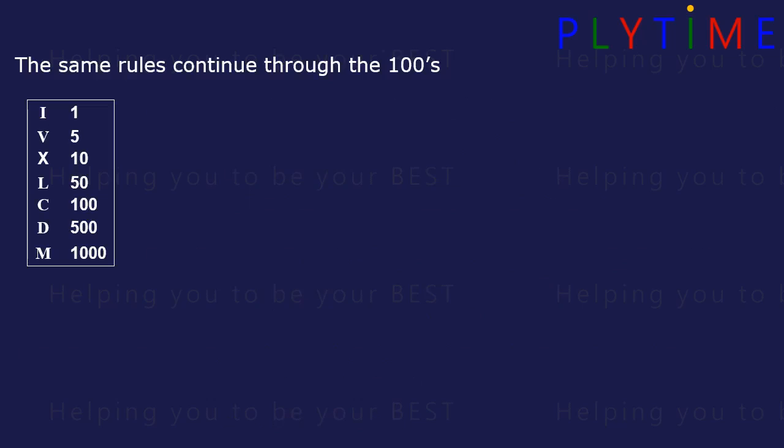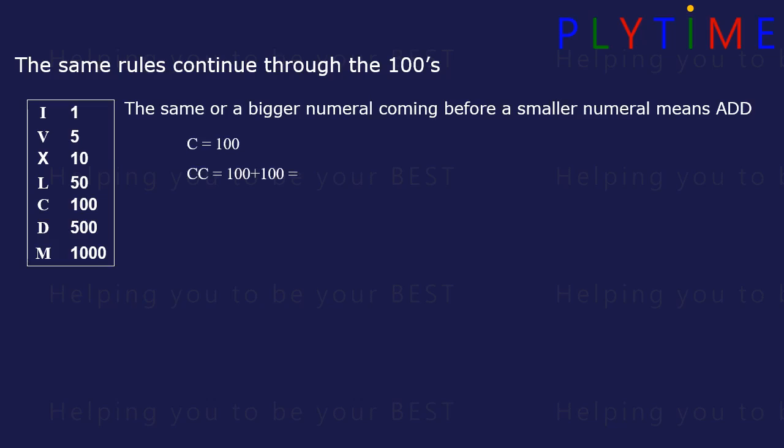The same rules continue through the hundreds. The same or bigger numeral coming before a smaller numeral means add. C is 100. CC is 100 plus 100, which is 200. CCC is 300.